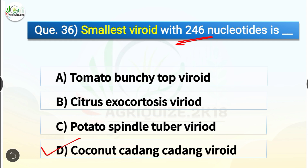Kadang-kadang is a disease caused by coconut kadang-kadang viroid. Viroids are small single-stranded RNA molecules ranging from 246 to 375 nucleotides long. In early stages of infection, the coconut kadang-kadang viroid consists of 246 nucleotides, making it the smallest viroid known.